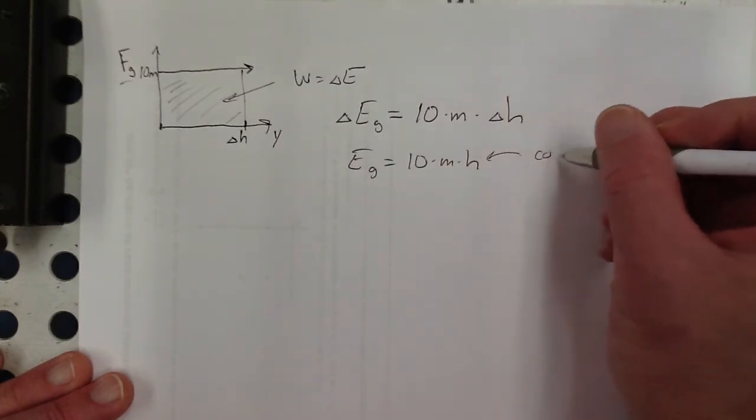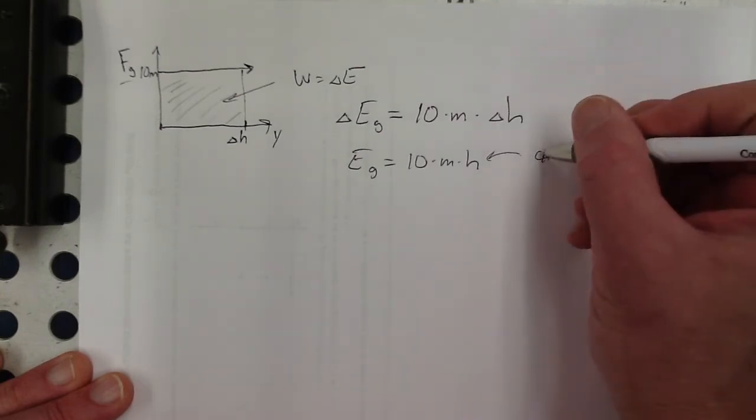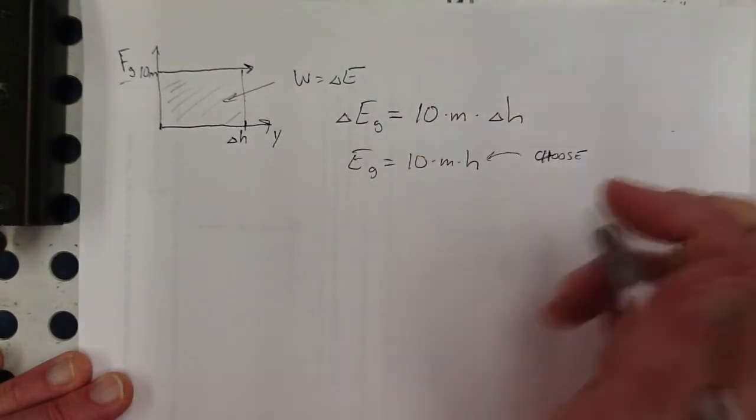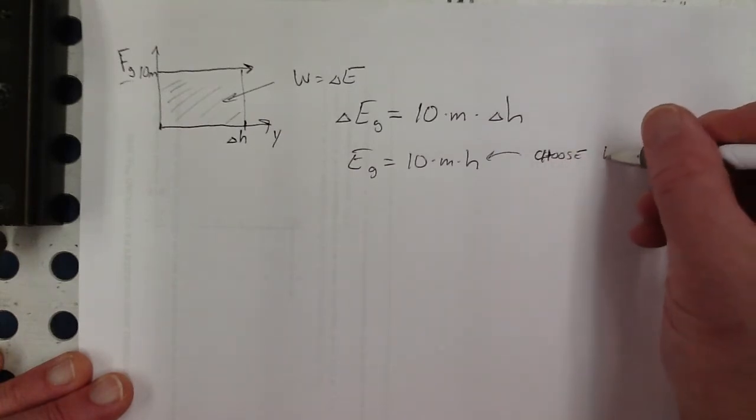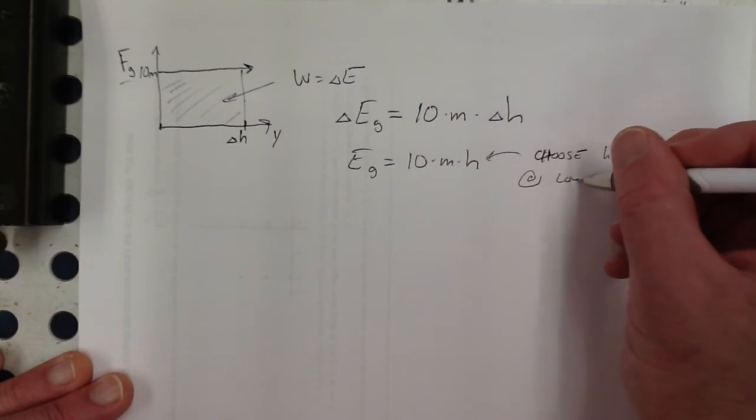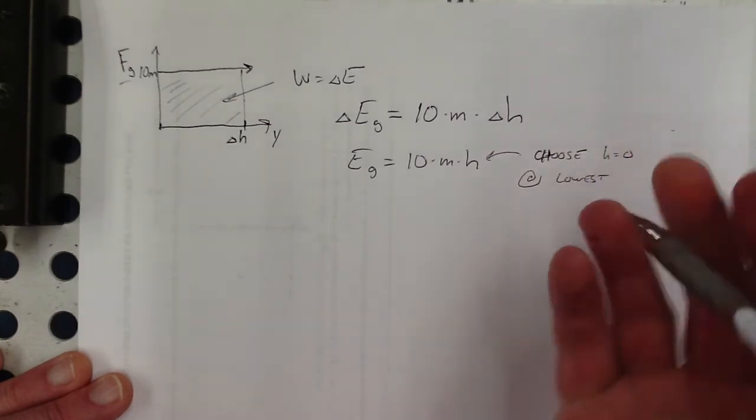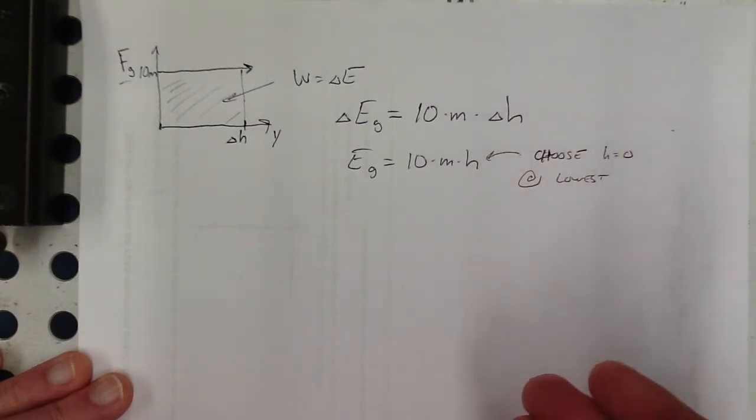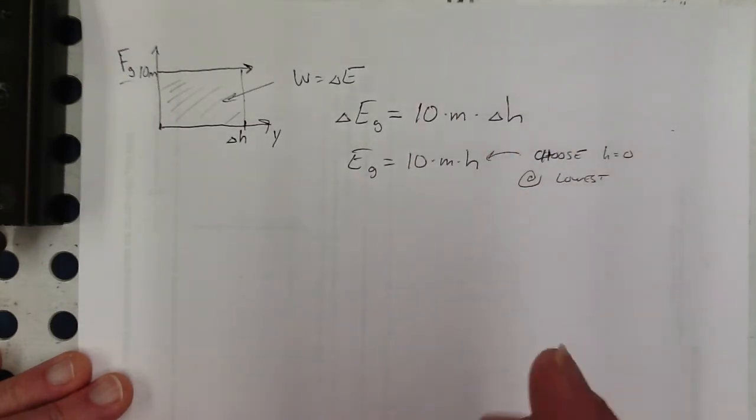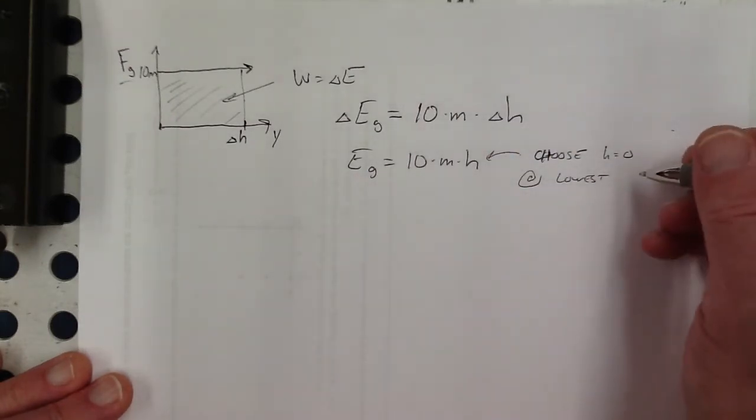So typically we're going to have a situation where there's like a position A and position B. So we're going to choose H equals zero at whatever the lowest point is. We don't have to think about, well, there could be a point lower than that. It doesn't matter. Whatever the lower point is of the two that you're interested in, that's going to be where your zero height is.